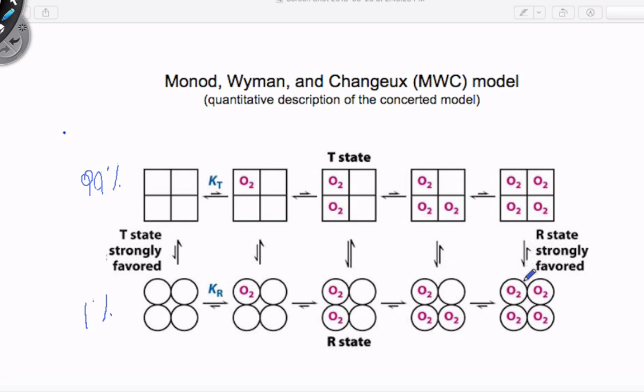And then by the time we are at all the substrates bound, it is 100% R or 99% R and 1% in the T. And this is the model that explains the sigmoidal curve by using probability rather than mechanistically with conformational changes.